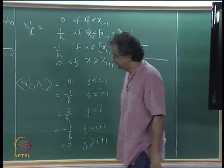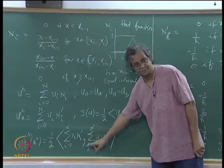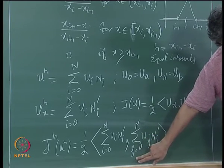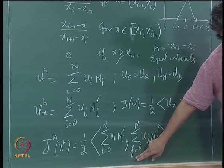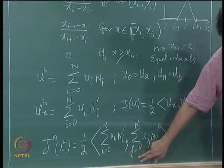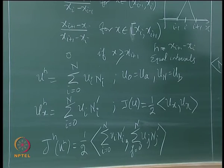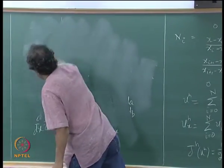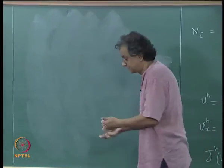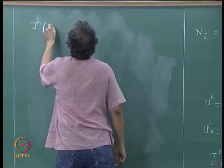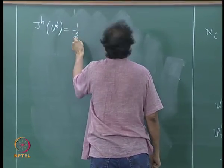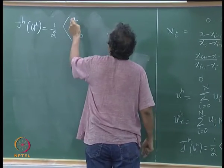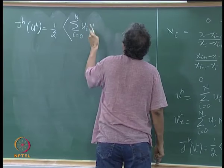So in the summation over j, the only sensible values of j that we take are j = i-1, i, and i+1 — all other dot products are zero. We can now rewrite J[u_h] using only these three contributing terms.